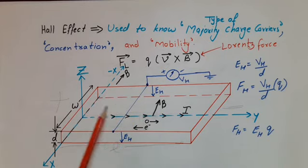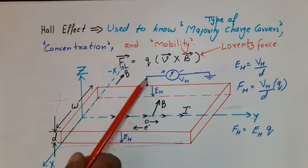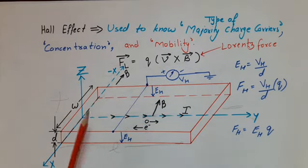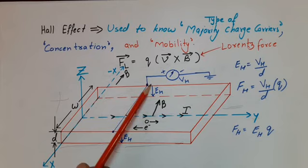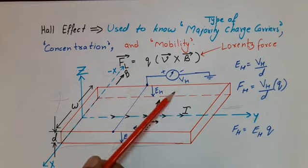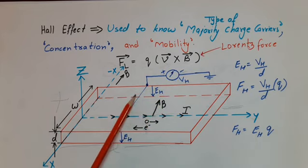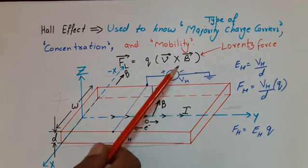Now, if the semiconductor is P-type, holes are majority carriers. Both electrons and holes move upward, but due to the majority of holes, the upper face becomes positive. If we put a voltmeter across the depth, connecting the upper surface to the positive terminal, the voltmeter gives a positive deflection. If we replace it with an N-type semiconductor, electrons and holes again experience an upward force, but due to the majority of electrons, the upper surface is dominated by negative charge, so the voltmeter deflection is negative. Hence, positive voltmeter reading → P-type; negative reading → N-type.